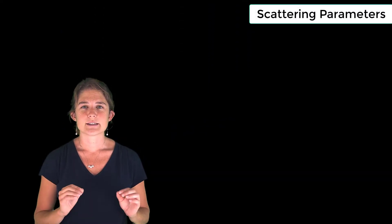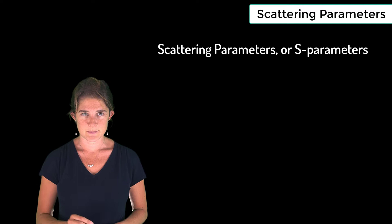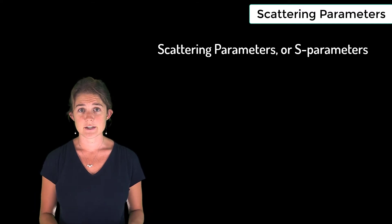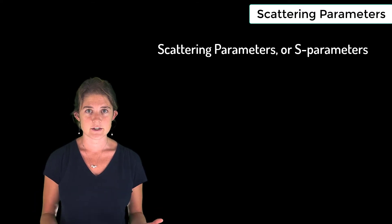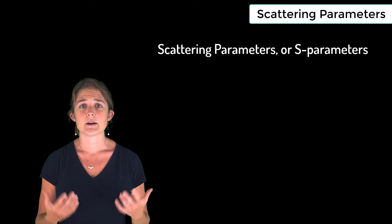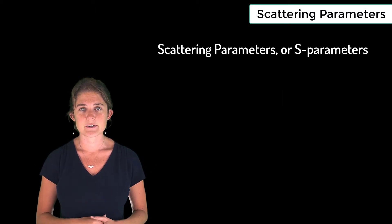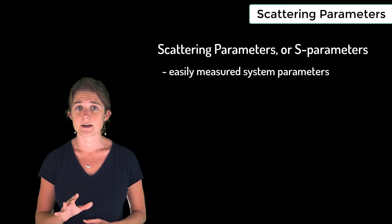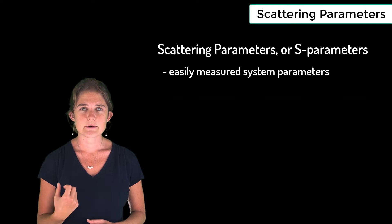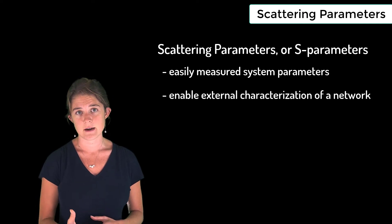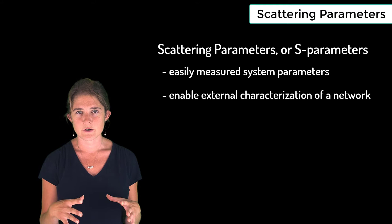The final topic for this module is scattering parameters, or S-parameters. If you go into RF engineering or if you're already in RF engineering, you'll be using S-parameters all the time. S-parameters are the system parameters that are most readily measurable. They allow us to characterize a network from the outside without necessarily knowing what's going on internally.